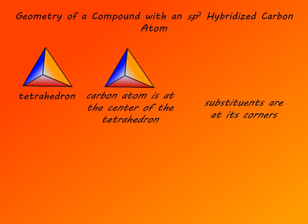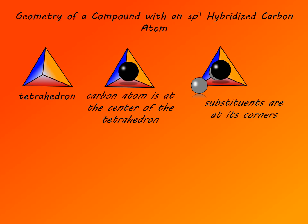Each face is colored blue, yellow, or red. The carbon atom is at the center of the tetrahedron, and substituents are at the four corners: one at the back, one down to the left, one at the top, and one down to the right. That is the geometry of an sp3 hybridized carbon atom with substituents — and it is actually what we can observe experimentally.